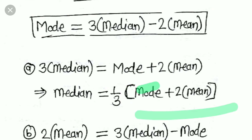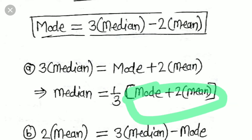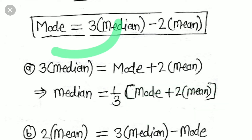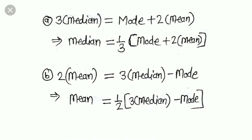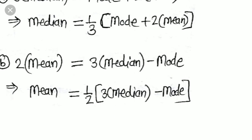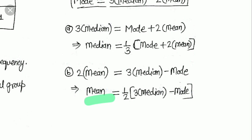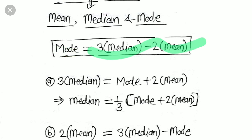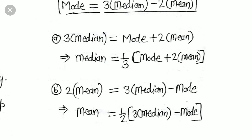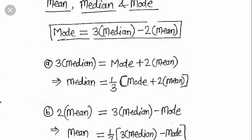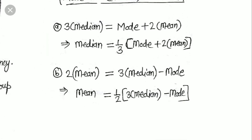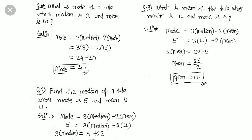Similarly, rearranging: 2 × Mean = 3 × Median − Mode, or Mean = (1/2) × (3 × Median − Mode). In various examinations they just present these rearranged forms. The basic formula is Mode = 3 × Median − 2 × Mean, and from this you can derive all the other forms. Remember this one formula and you can find any correct answer.